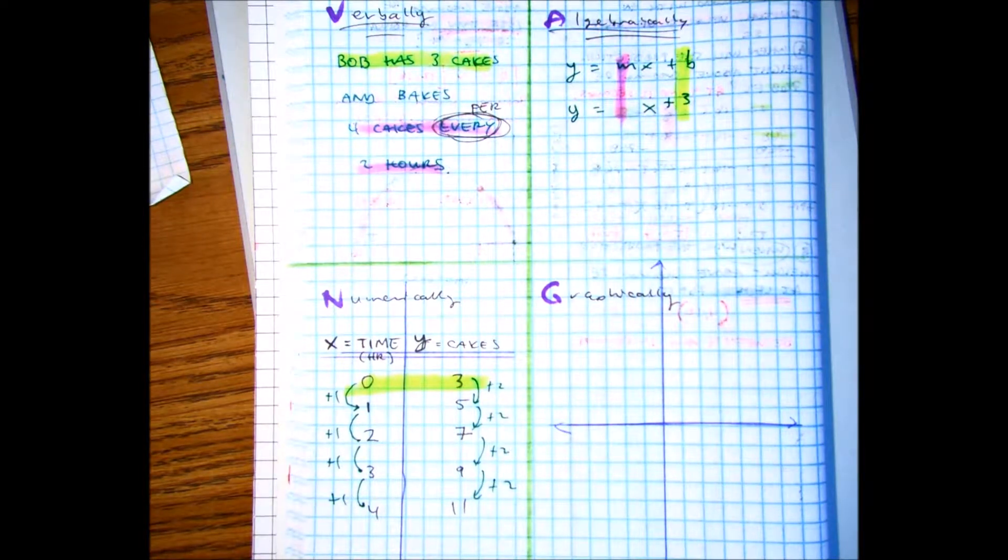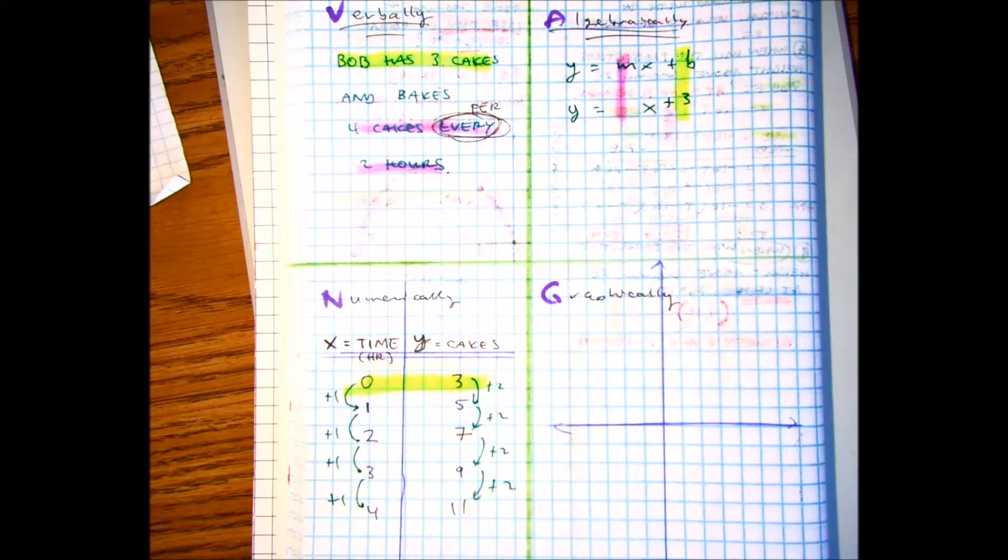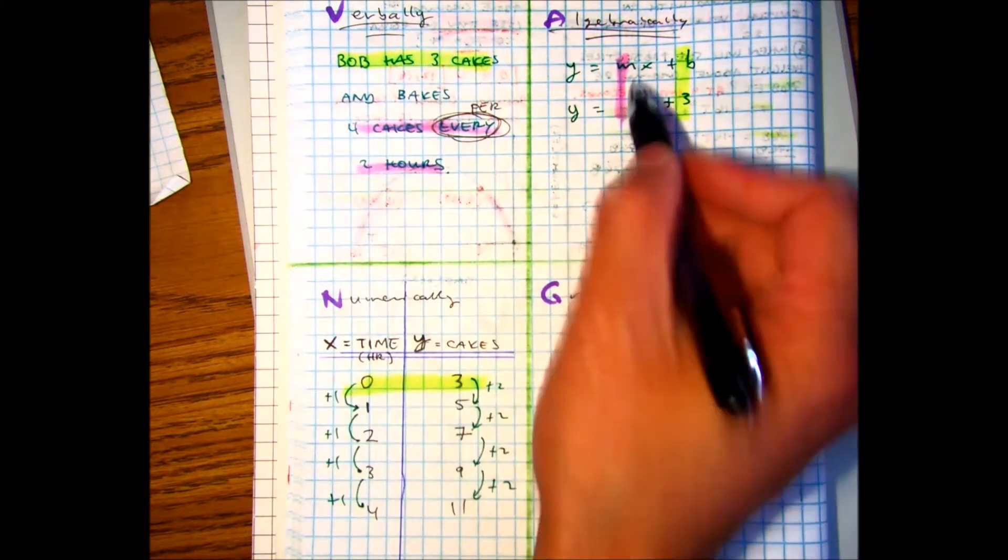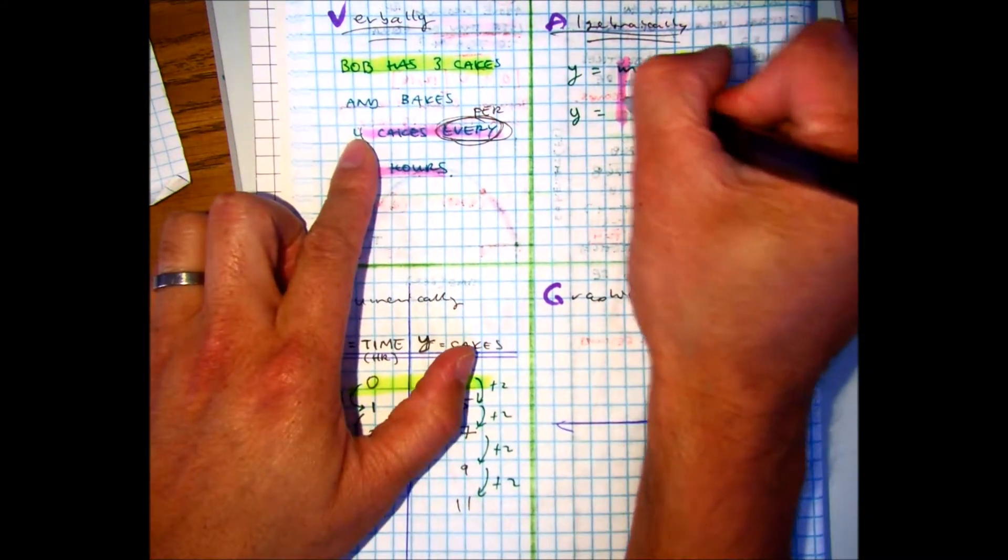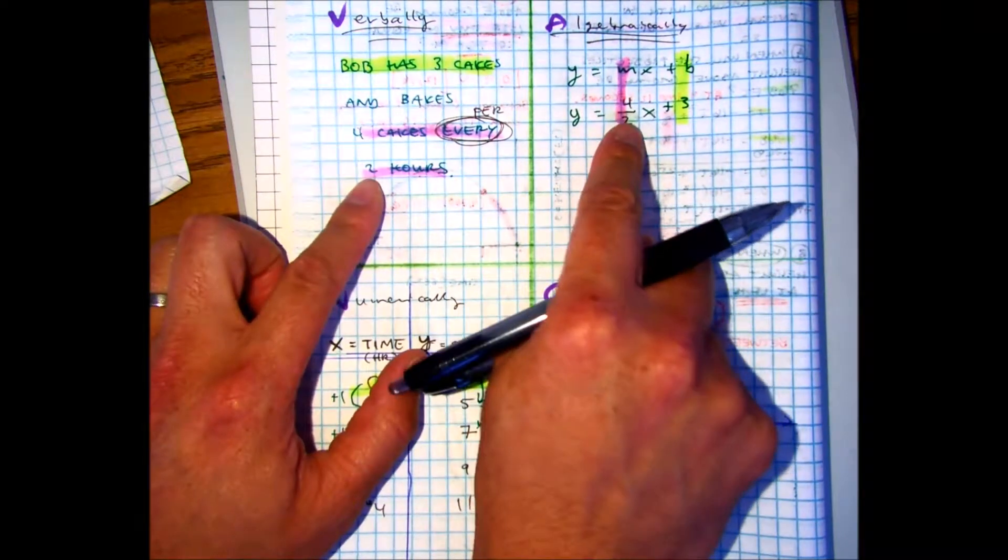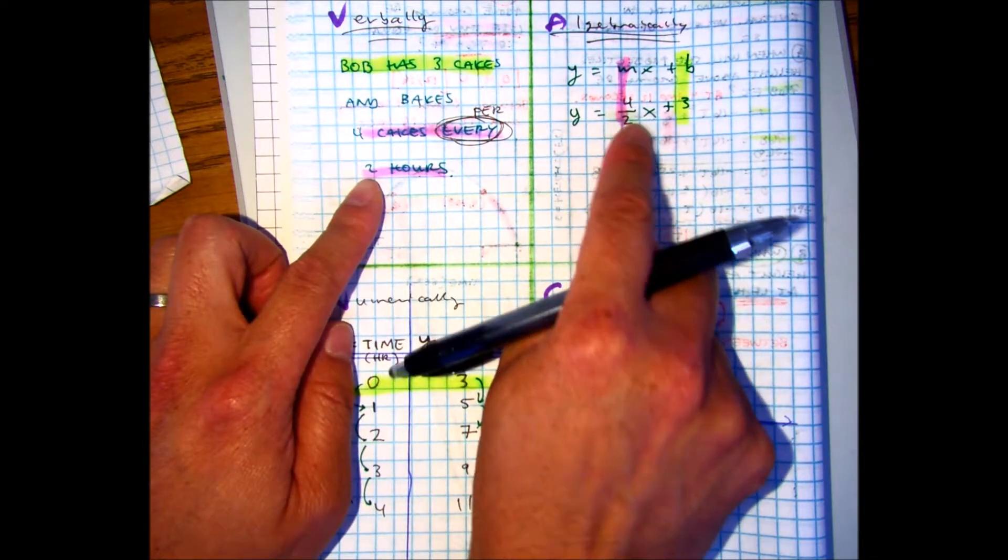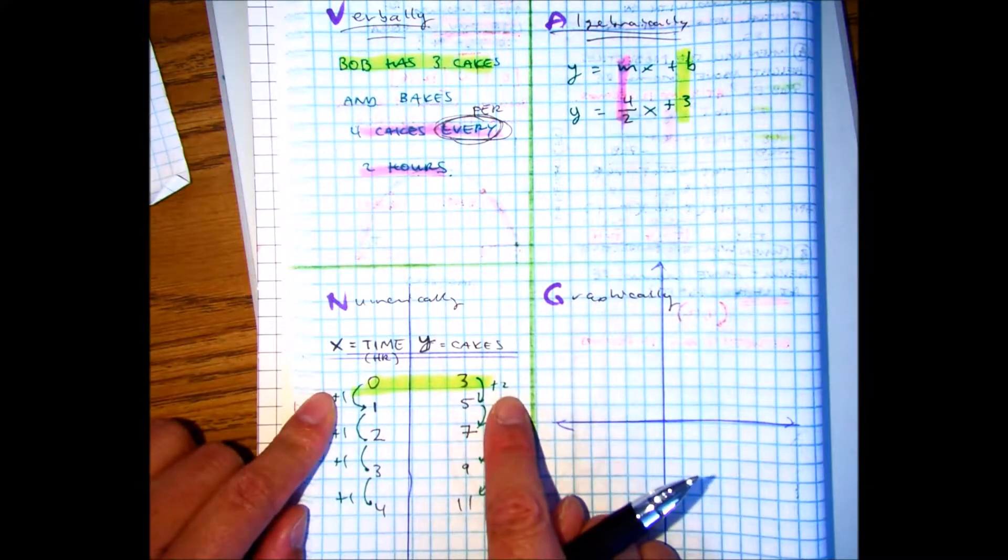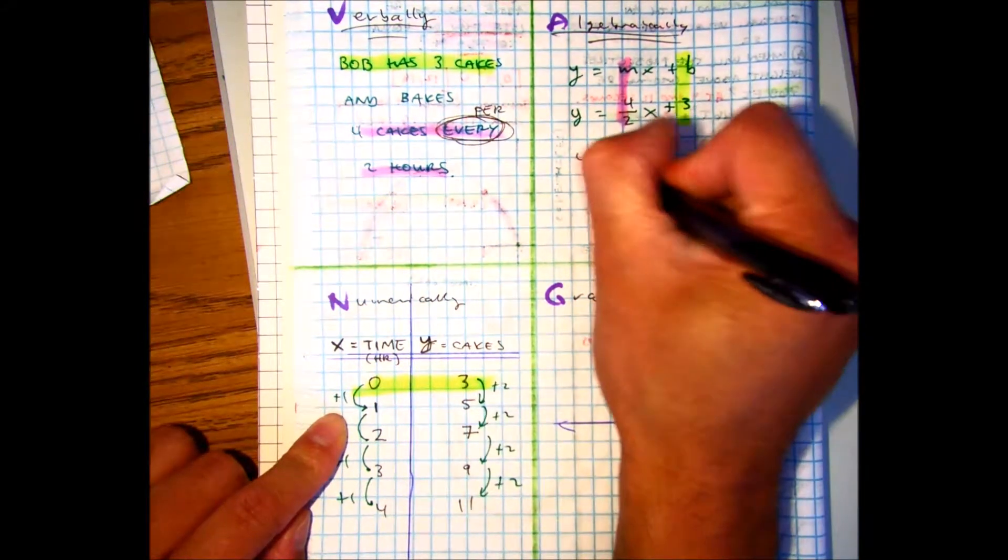Right. Maybe back in the day, 20 years ago, I wanted to work at In-N-Out because they made like $8 an hour. Right? That is your slope. So in this case, it's four over two. Four cakes for every two hours. Or if you reduce that, it's what? Two over one.